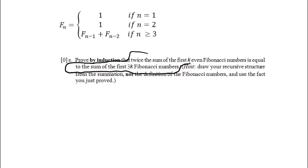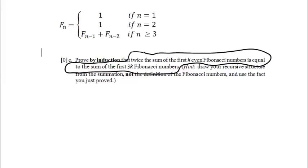It's left implicit in this statement that we want to say this for all k. What is k? We're talking about the first k even Fibonacci numbers, so k won't be negative or fractional — it's going to be an integer, either a non-negative or positive integer. I like degenerate cases, so I'm going to say k is a non-negative number. This is my predicate P(k).